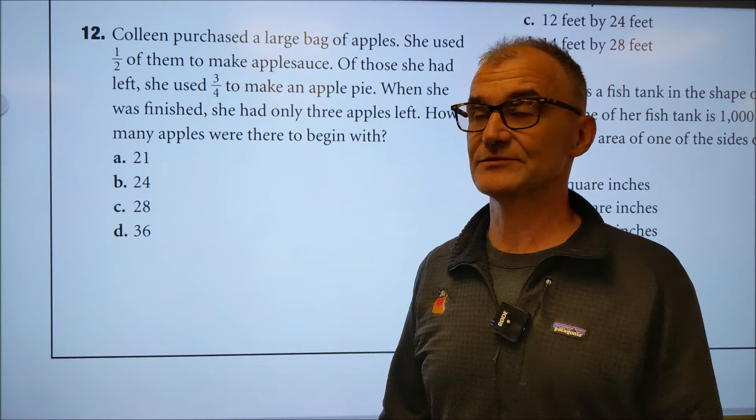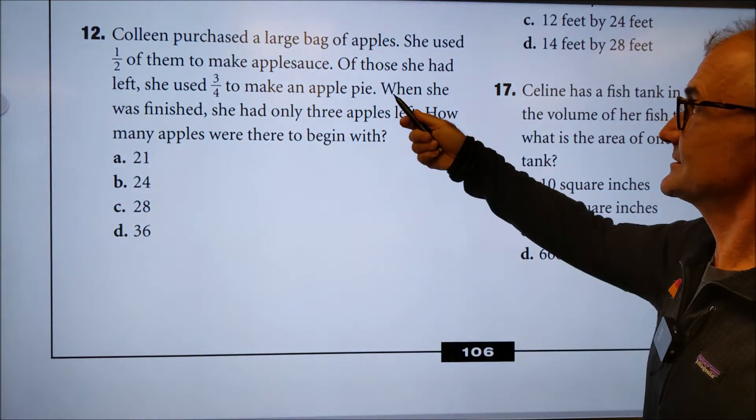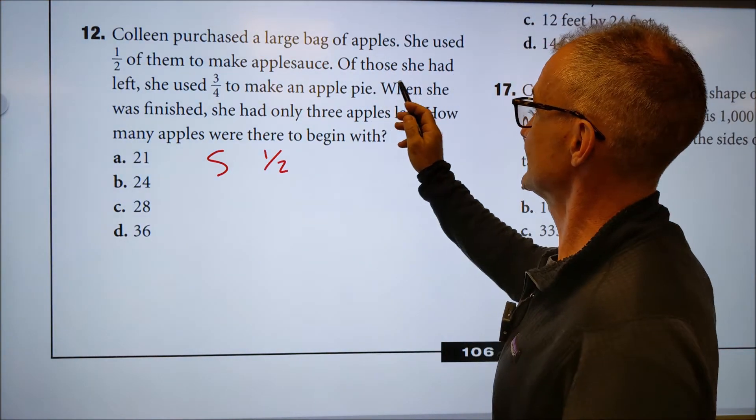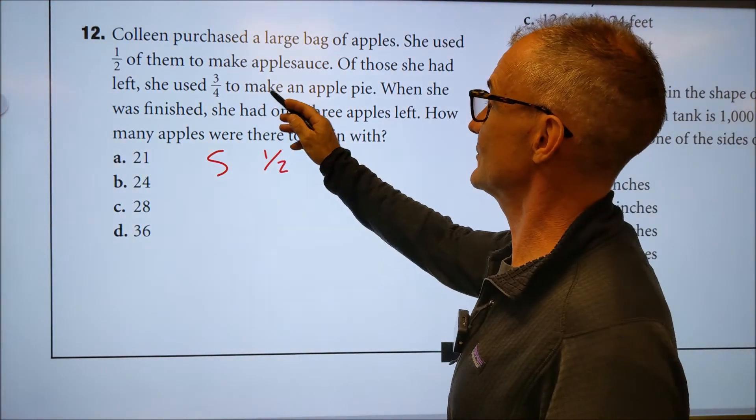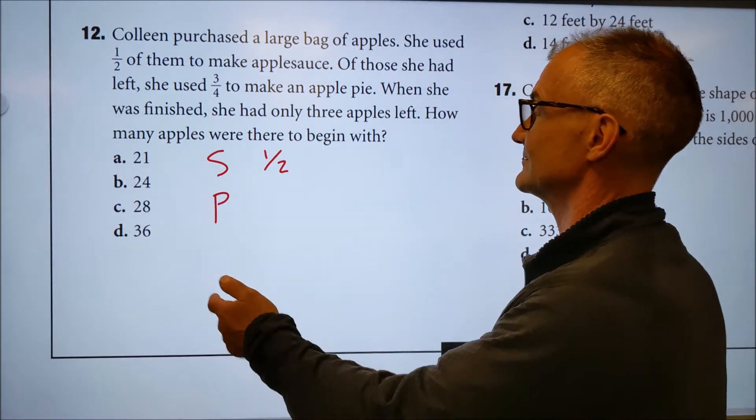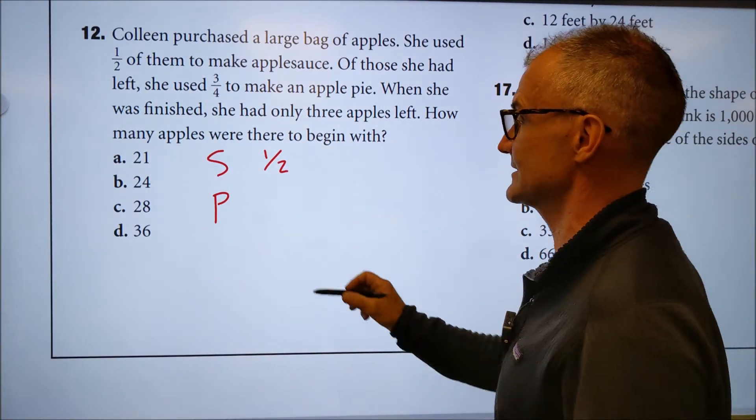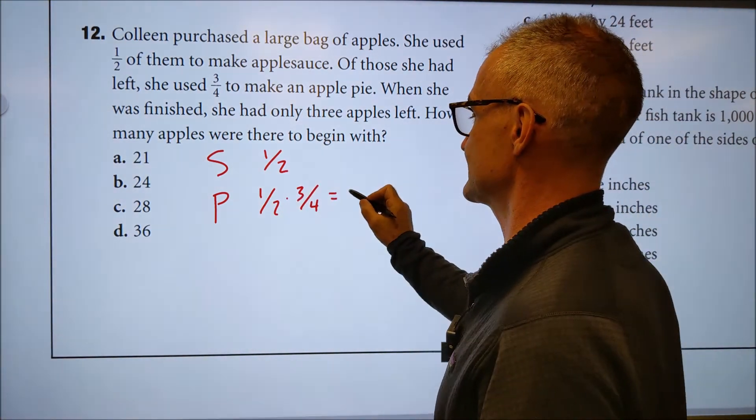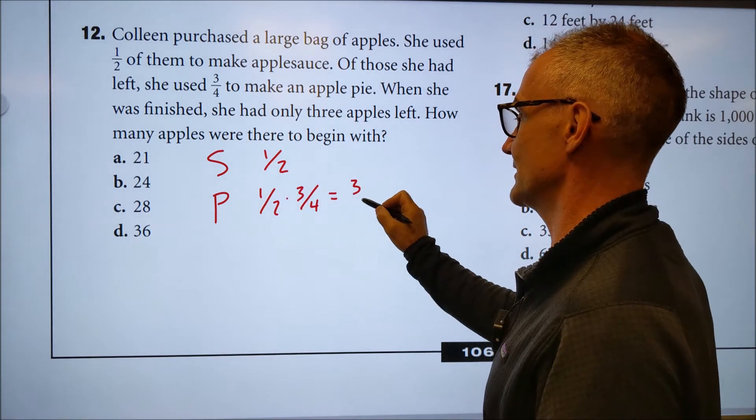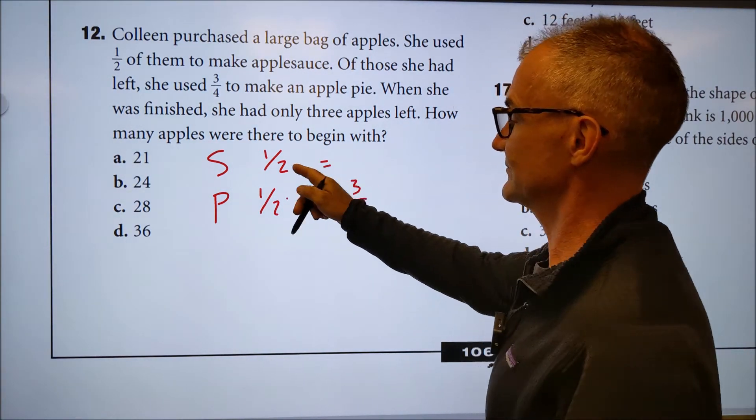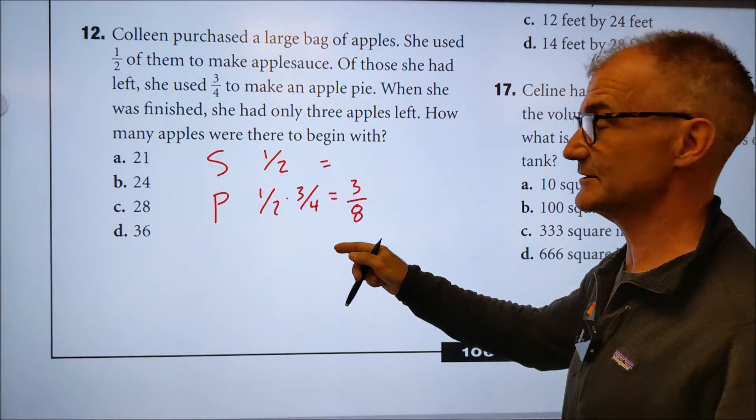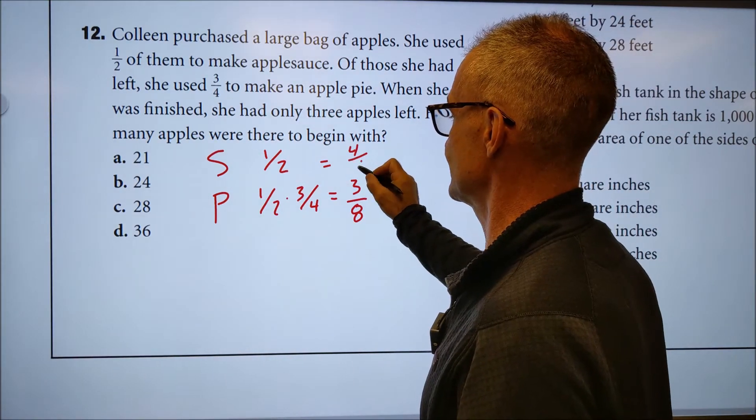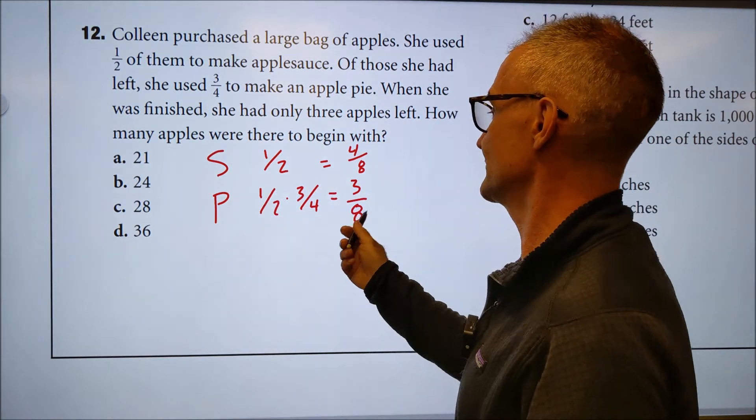Problem number 12 from chapter two fractions. She purchased a large bag of apples. Half of them were to make applesauce. So half went to applesauce of those she left. She used three quarters to make pie of the half. She used three quarters to make pie. So this amount is a half times three quarters. When I multiply fractions, just multiply across the top to get three, multiply across the bottom to get eight. And then I'm actually going to convert this into a common denominator. So one half in eights, I'm going to multiply by four over four to get four eighths. So this one's four eighths for sauce, three eighths for pie.